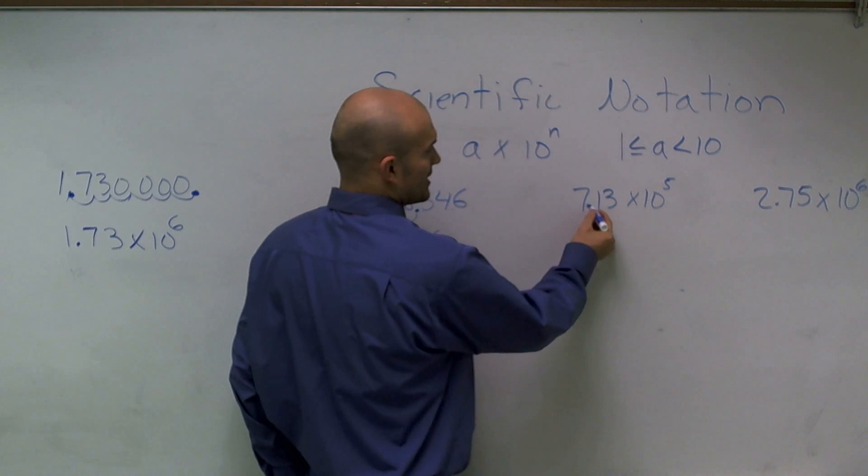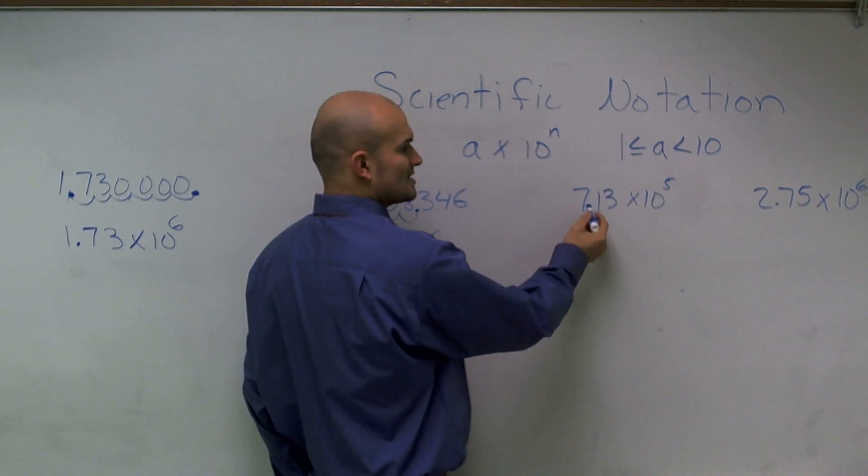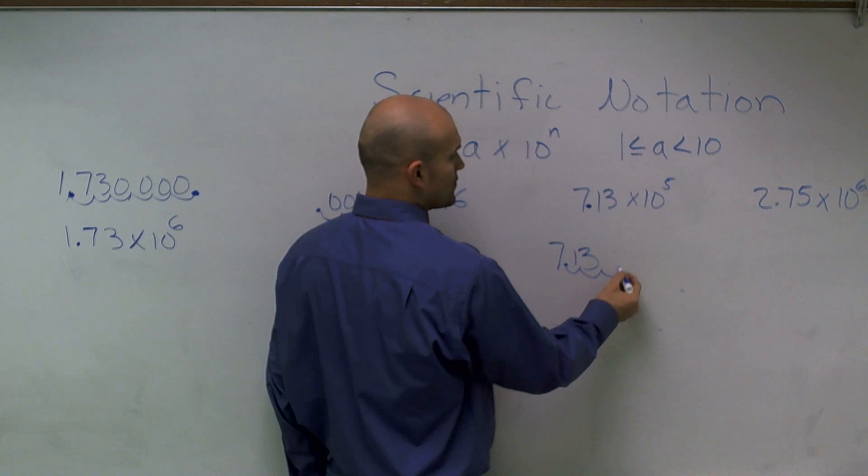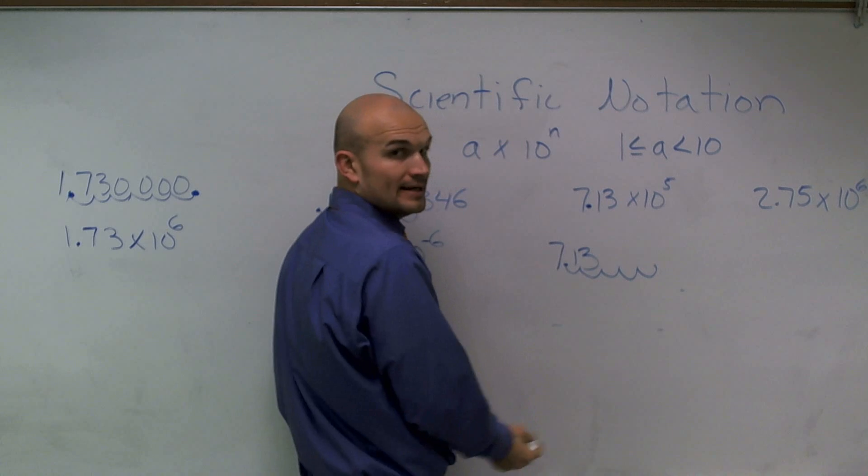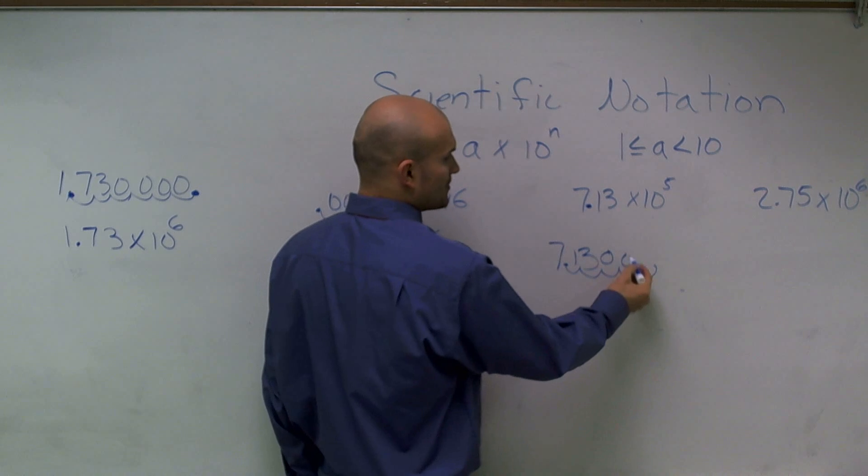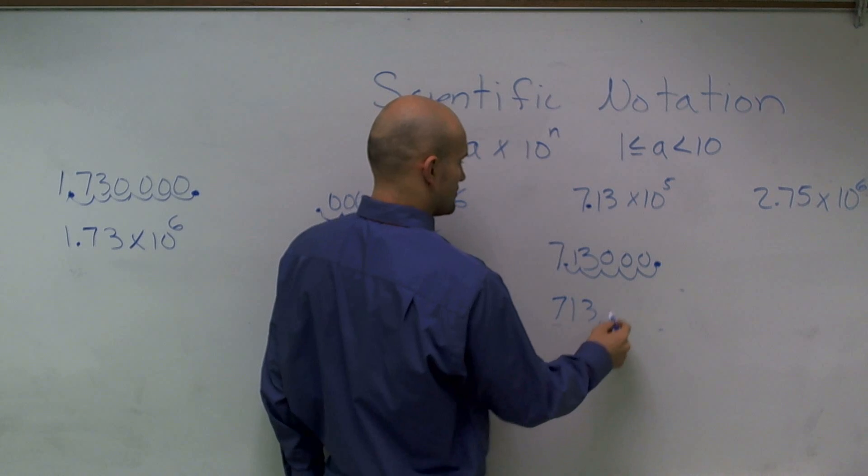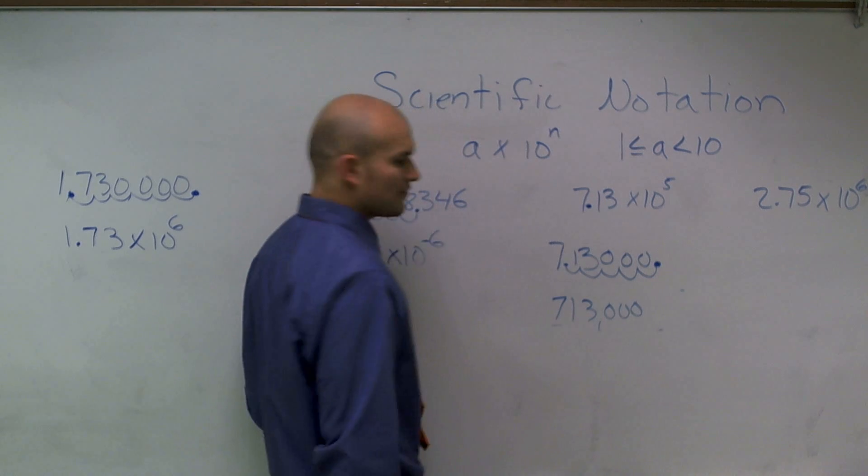Here, since I have my 10 to the 5th power, that just tells me I'm going to move my exponent five spots. 1, 2, 3, 4, 5. And now with these remaining spots, I'm going to fill them in with zeros. So my final answer is 713,000.